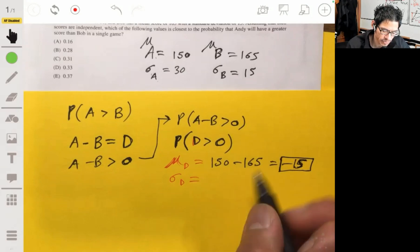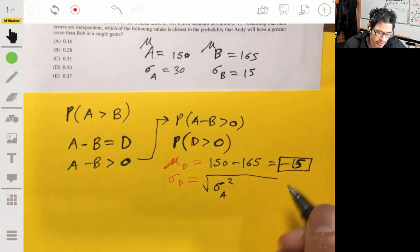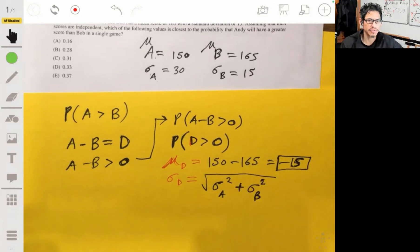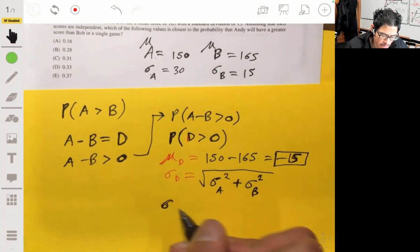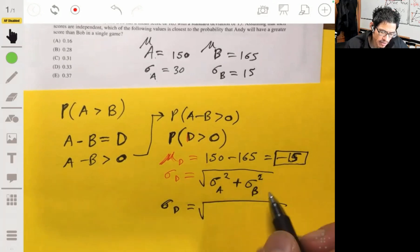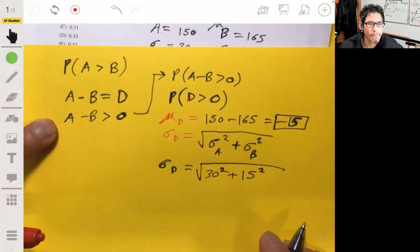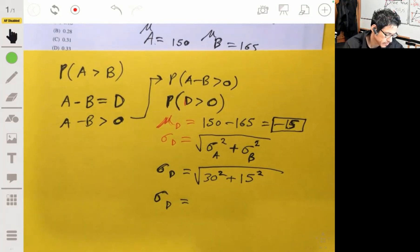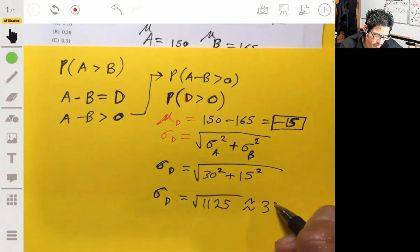Now, the standard deviation is a little different. What you're going to do is take the square root of the sums of the standard deviations of Andy's score and Bob's score. And make sure you square the standard deviations, also known as the variance. So we figure out what this will be, get the standard deviation of D. So we have 30 squared plus 15 squared. So the standard deviation of D is the square root of 900 plus 225, which is the square root of 1125, which is going to be about 33.54.